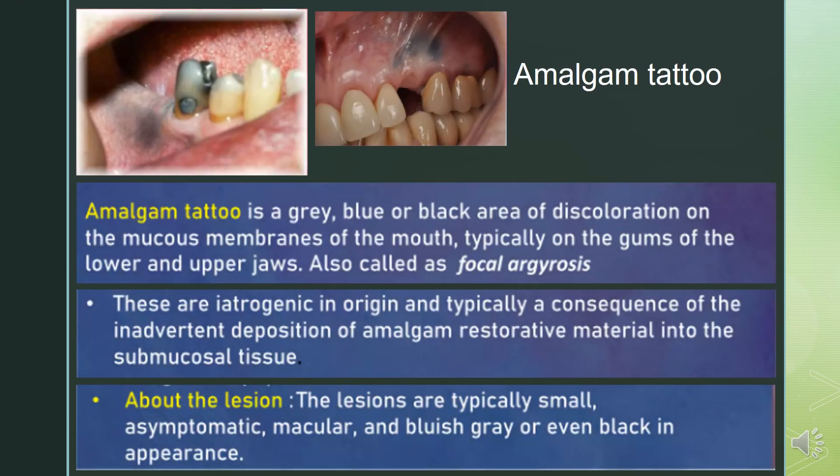Amalgam tattoo is a gray, blue, or black area of discoloration on the mucous membranes of the mouth, typically on the gums of the lower and upper jaws. Also called focal argyrosis, these are iatrogenic in origin and typically a consequence of the inadvertent deposition of amalgam restorative material into the submucosal tissue. The lesions are typically small, asymptomatic, macular, and bluish-gray or even black in appearance.